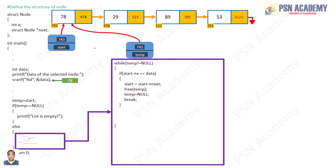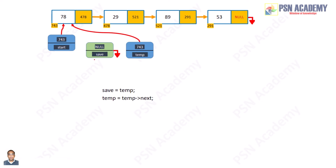Now let's get back to the previous situation. Our given data will be either 29, 89, or 53. We have to find out which node the data is residing in. To search for it, the temp pointer will help, but we need another pointer that will follow the temp pointer. So in the else part, we will write those codes. Let's see a demo of how the save pointer does the job alongside the temp pointer. The save pointer is initially pointing to null, and temp is pointing to the first node at 743. These are two lines executed repeatedly until temp stands on the node where the data is residing.